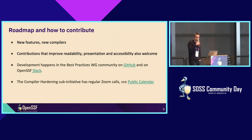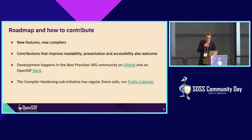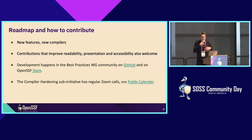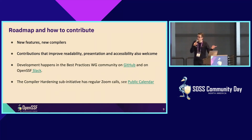On the roadmap: the first release came out at the end of last year and we're continuing to work on this, continuously adding new documentation and new features. Ideally we'd also like to cover additional compilers — right now it's primarily GCC and Clang. Contributions are always welcome, covering both hardcore content about compiler options and improving readability or tooling. This entire effort is running as a sub-initiative in the best practices working group. You'll find all the information on GitHub, and we have bi-weekly calls — there's currently a doodle out to determine the time slot.